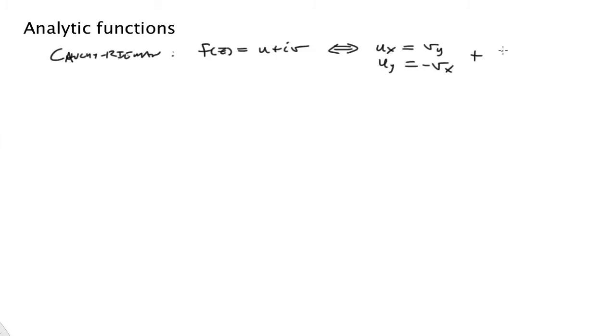Alright, plus smoothness of all partials of u and v. So we have to have smoothness of these derivatives right here. Okay, so then the implication goes both ways. So if this is true then we can say that f prime of z exists at a point z0.